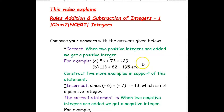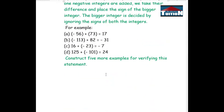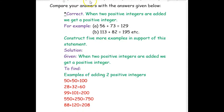Hi, we are from At Home Tuition. In this video we are going to see a few examples on the rules of addition and subtraction of integers. Our first question is: compare your answers with the answers given below. When two positive integers are added, we get a positive integer — this statement is correct.